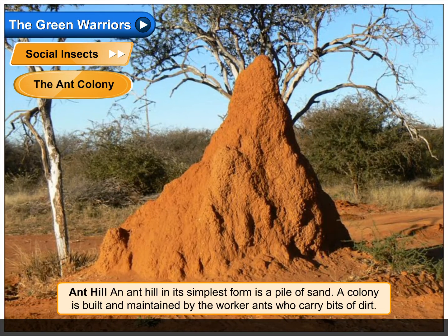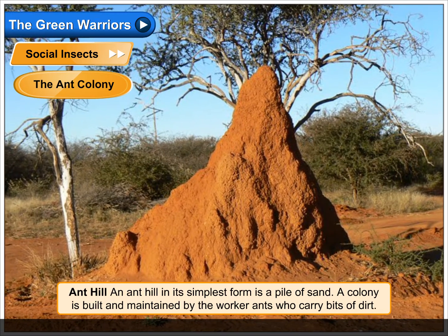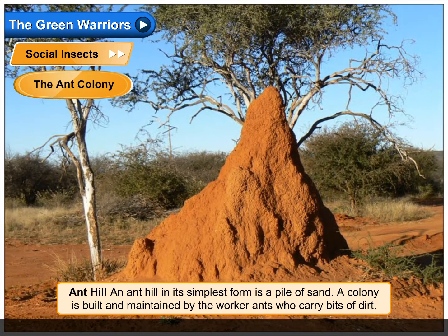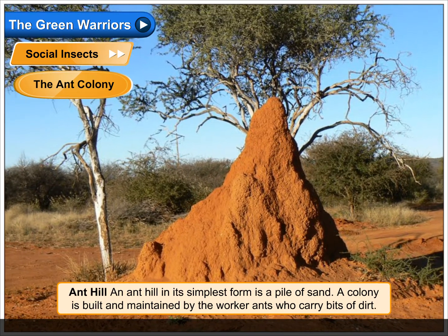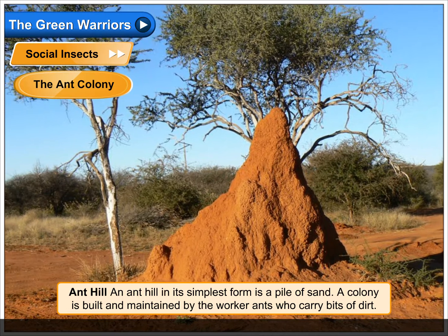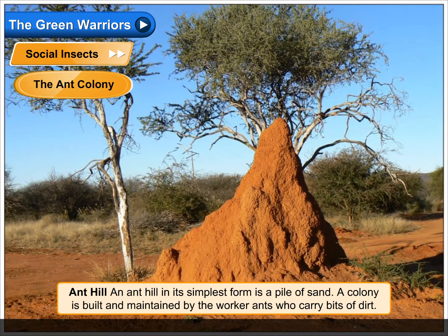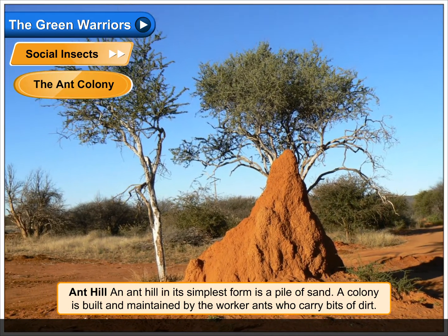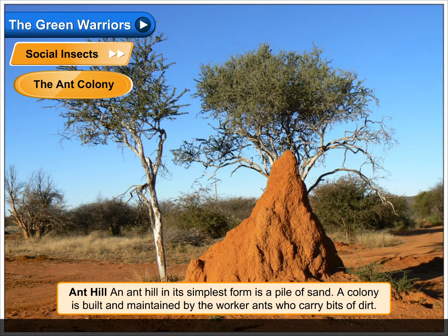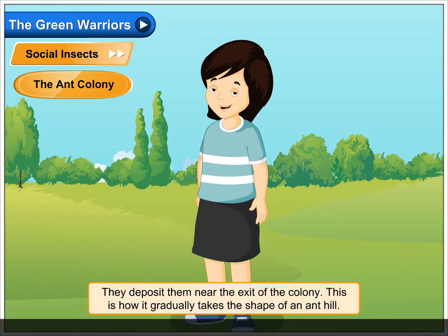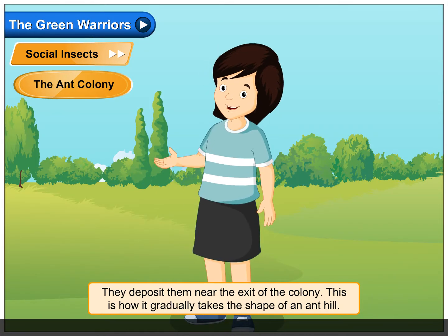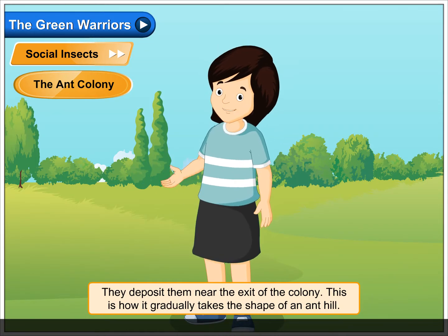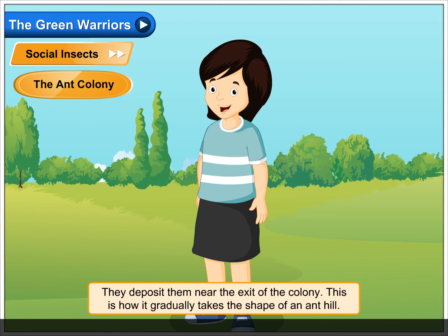Ant Hill. An ant hill in its simplest form is a pile of sand. A colony is built and maintained by the worker ants who carry bits of dirt. They deposit them near the exit of the colony. This is how it gradually takes the shape of an ant hill.